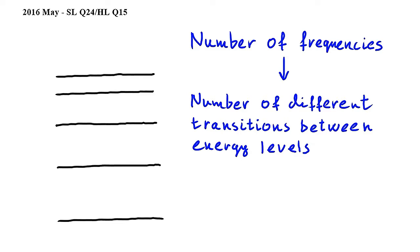Let's count the number of these different transitions. So starting at the highest energy level we can have one, two, three and four transitions.